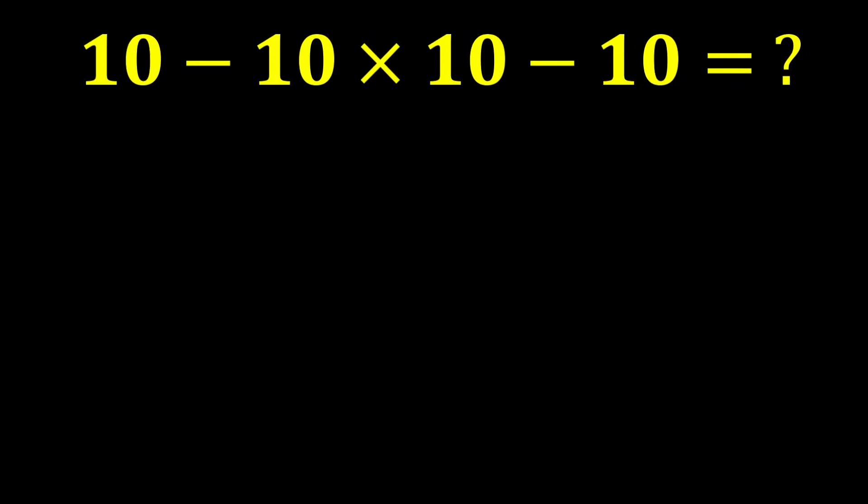10 minus 10 times 10 minus 10. In this expression, there are two subtractions and one multiplication. According to PEMDAS, multiplication has a higher priority than subtraction, so we perform the multiplication first.